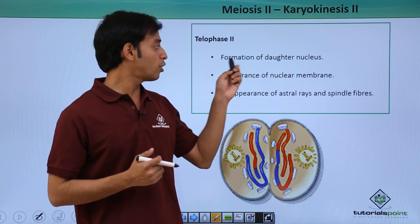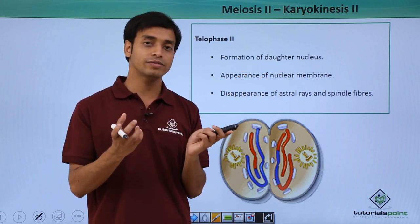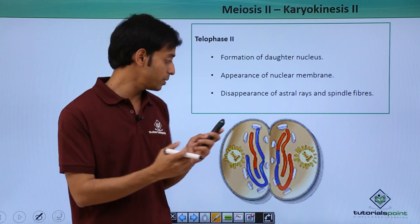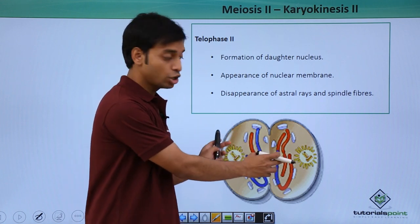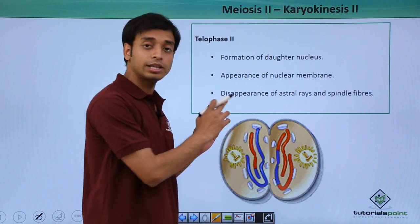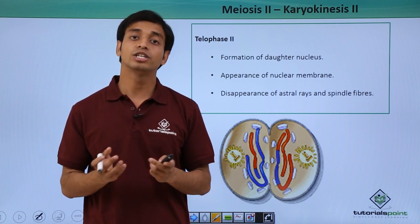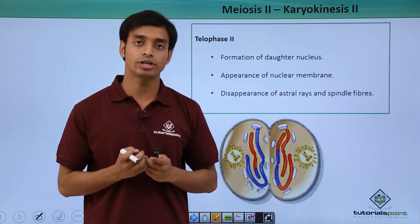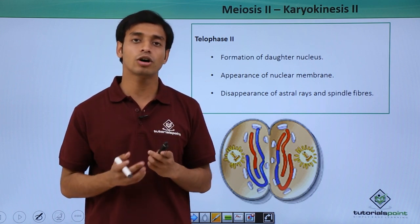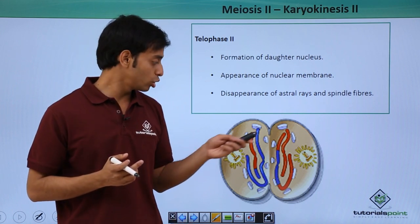The last phase is Telophase 2. Here, the formation of daughter nuclei takes place. The sister chromatids have moved towards the poles, and on the outer membrane the nuclear membrane is going to develop. The nucleolus is going to develop as well, and the spindle fibers are going to dissolve into the cytoplasm. Cytokinesis follows along with Telophase 2.